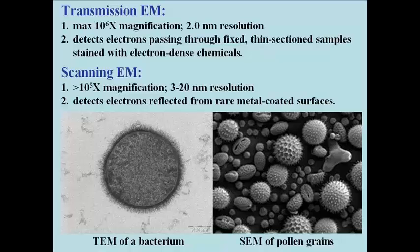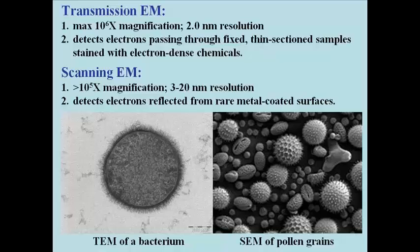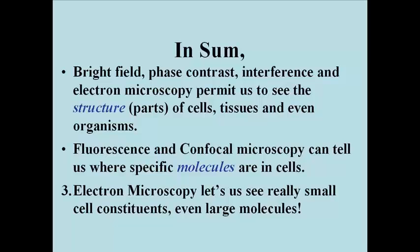It is even possible to look at the surface features of whole organisms. You can Google scanning electron microscopy and see lots of examples of SEM images from very small things to very large things. We can even use electron microscopy under the appropriate conditions to localize specific molecules to those very small cell compartments or cell components.